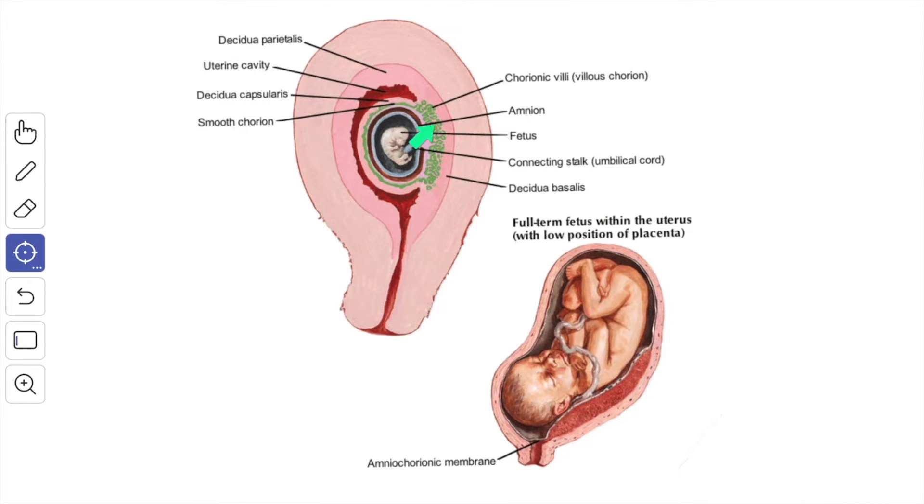The chorionic villae attached to the embryonic pole of the blastocyst proliferate more rapidly and they are called as the chorion frondosum. The rest of the chorionic villae of the ab embryonic pole they degenerate and they disappear and they are known as chorion leave.